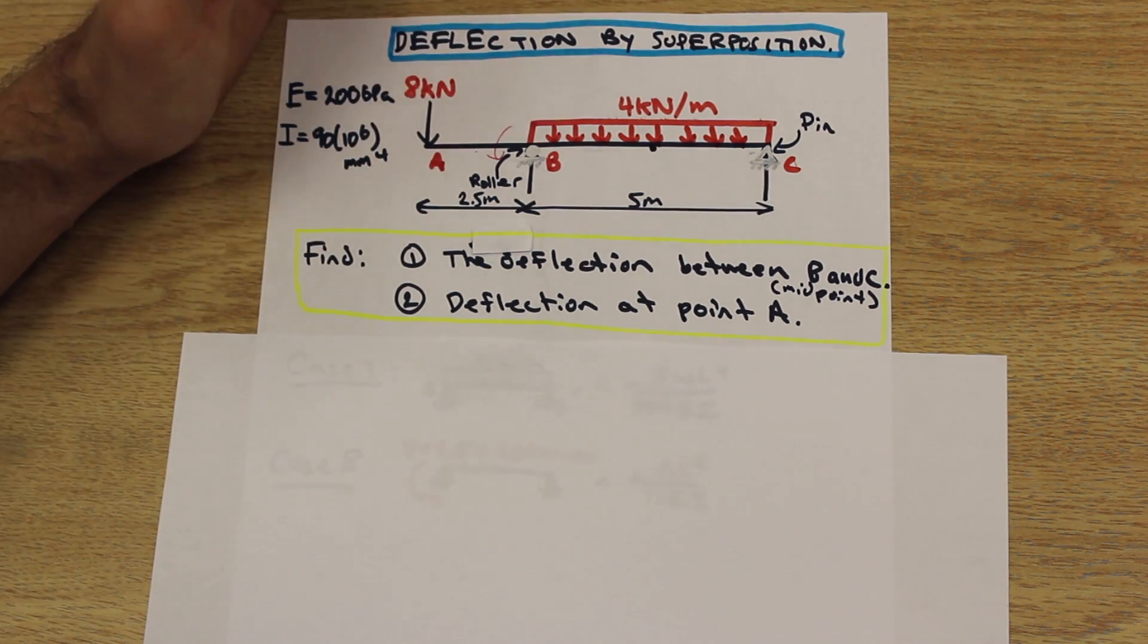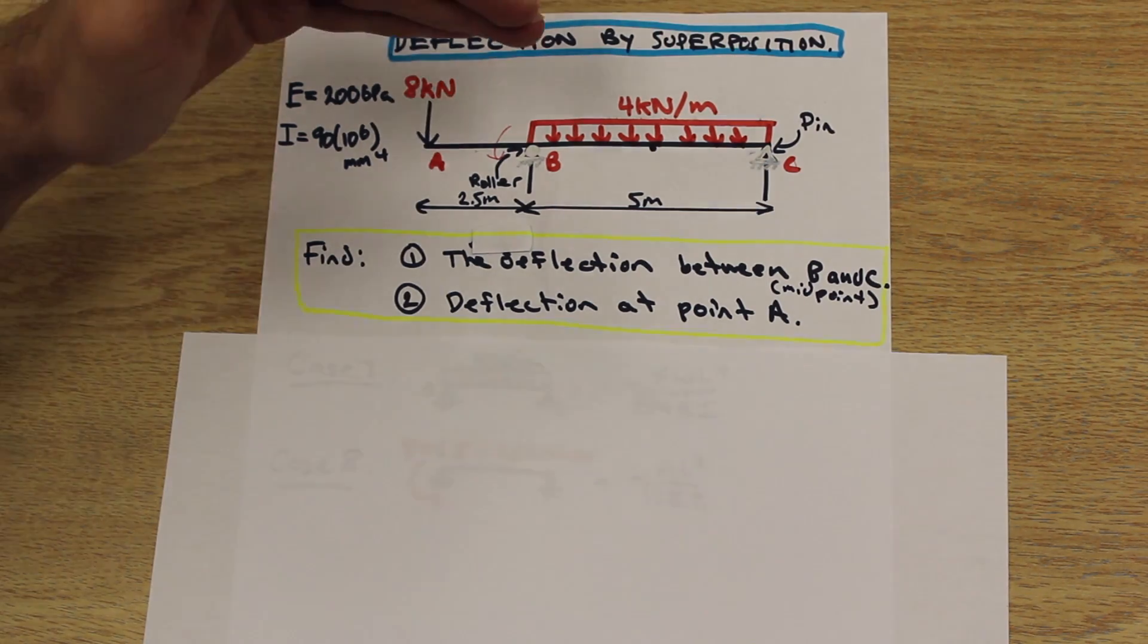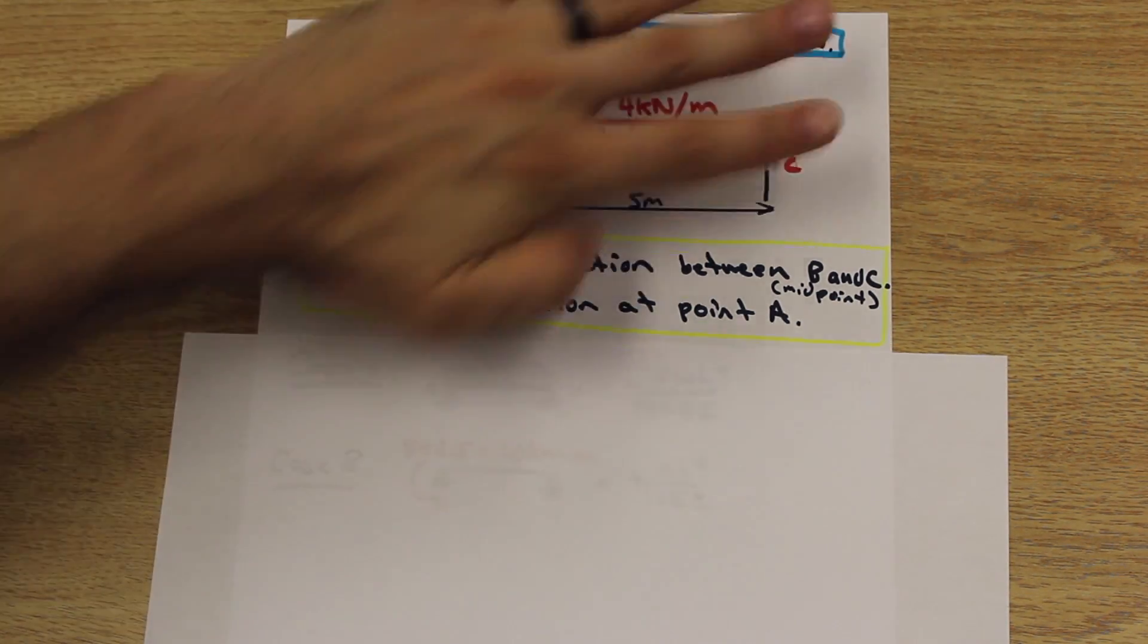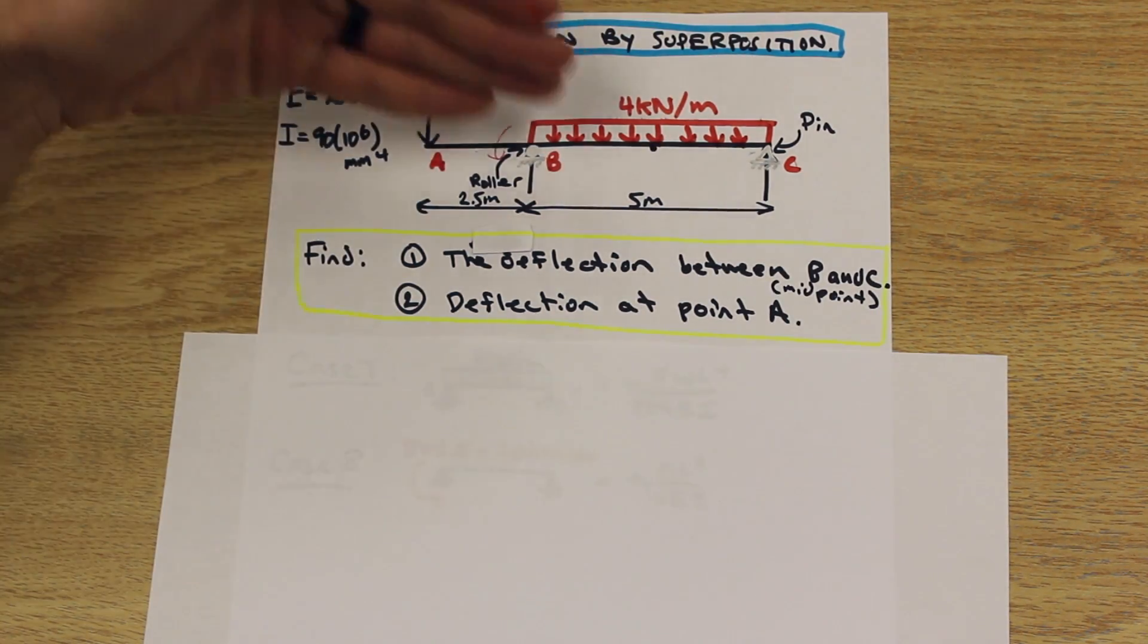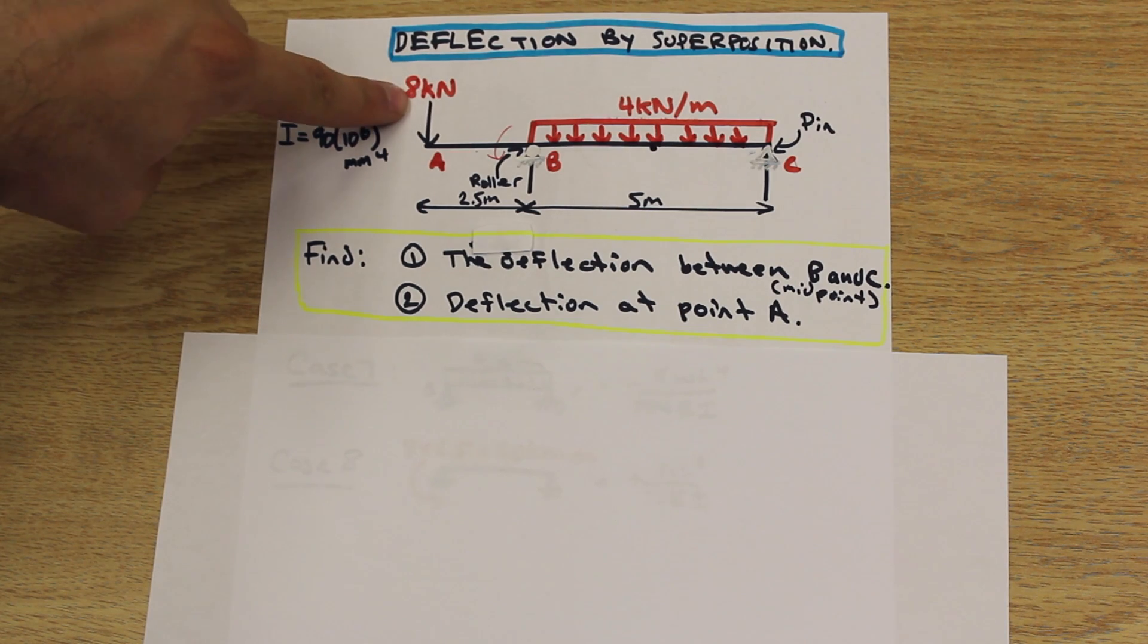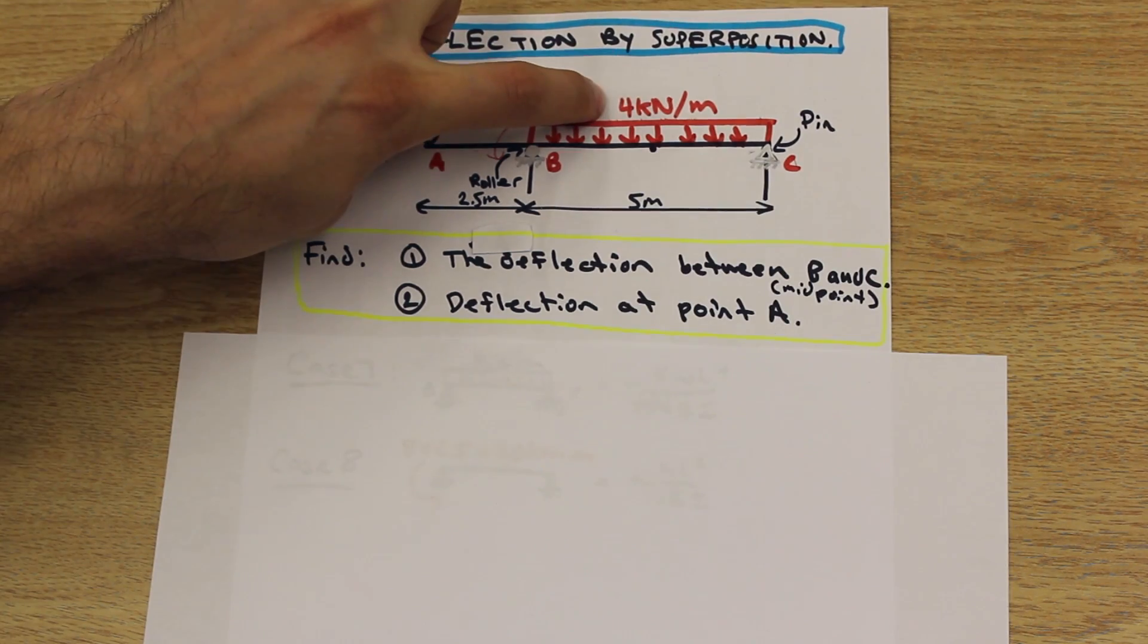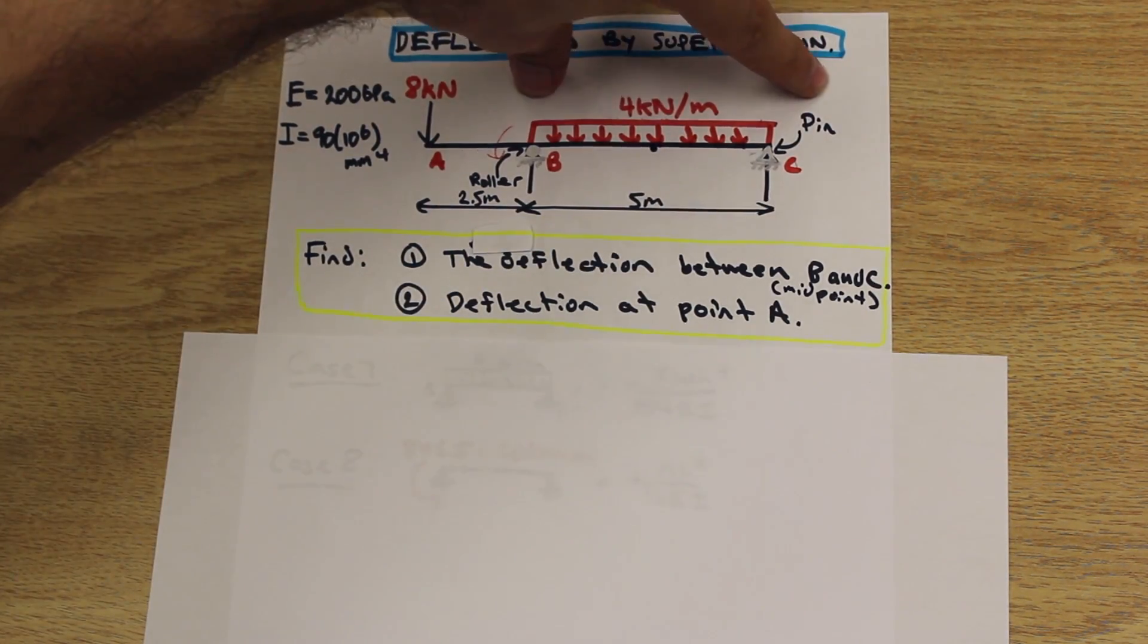So the question asks us to find the deflection between B and C at the midpoint, not the maximum, the middle point between B and C, so 2.5 meters from either side. So let's begin.